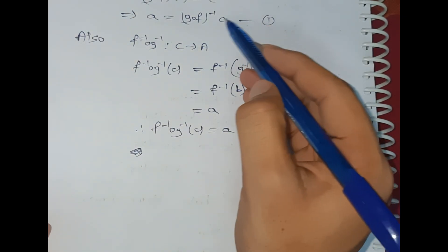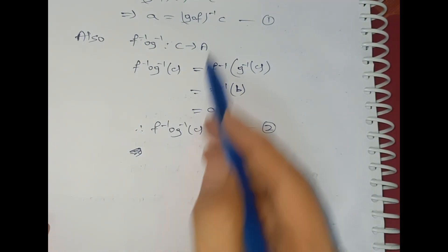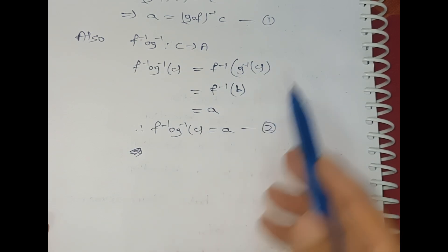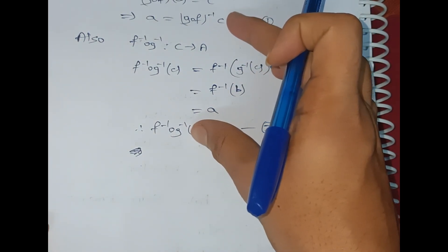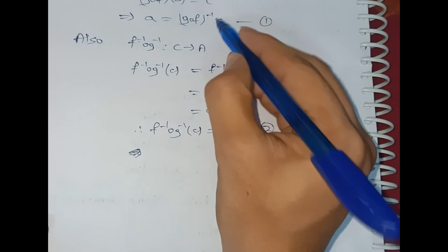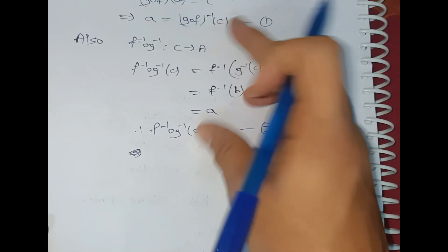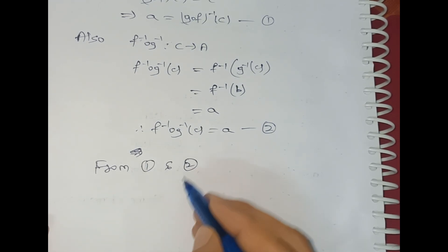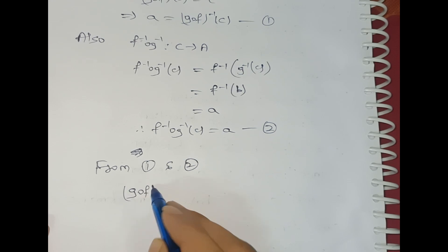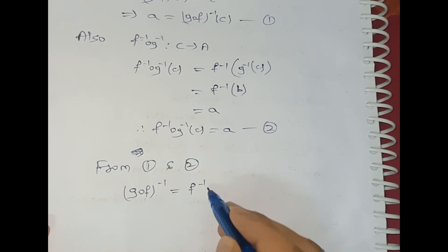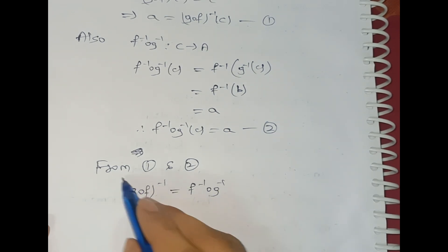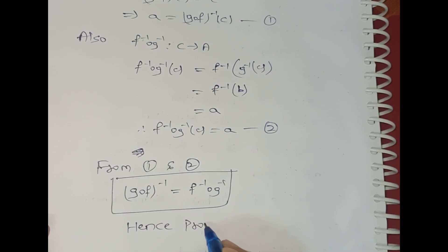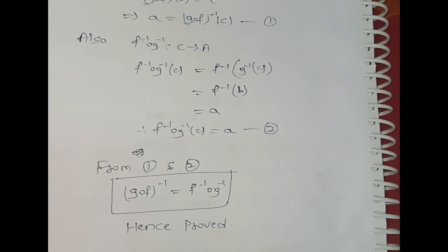From Equation 1 and Equation 2, (g∘f)⁻¹(c) = a and (f⁻¹∘g⁻¹)(c) = a. Since both have the same domain C and yield the same value, we conclude (g∘f)⁻¹ = f⁻¹∘g⁻¹. Hence proved. Thank you — please like the video and share with friends.